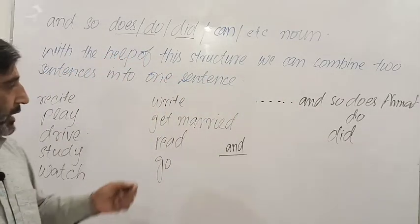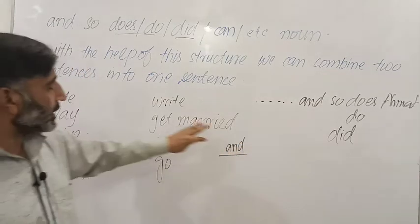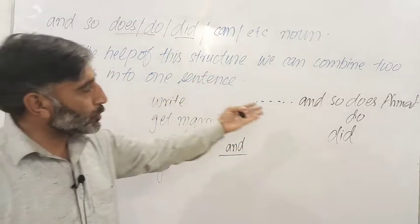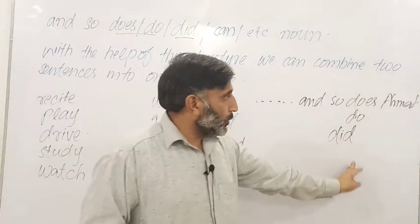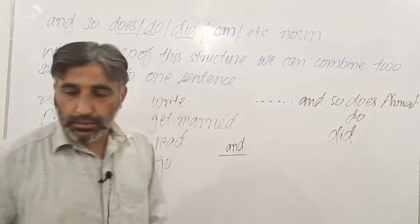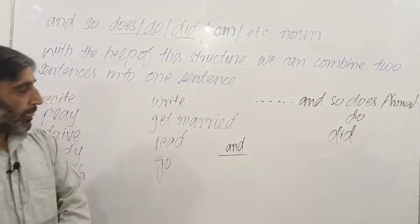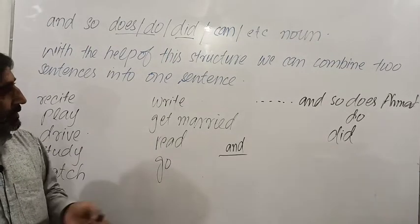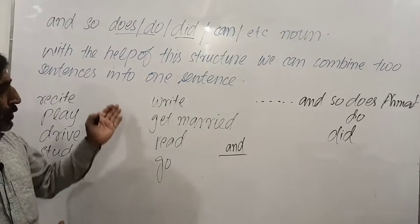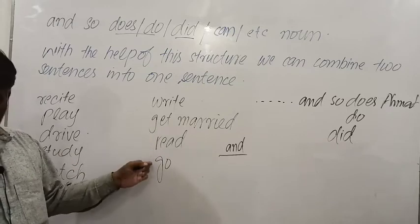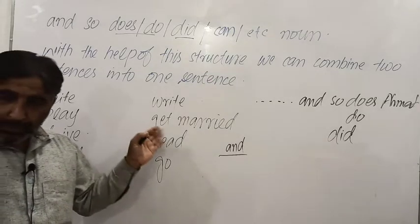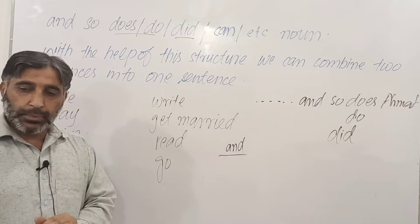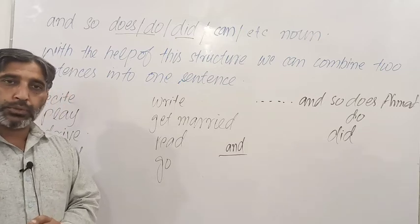تو اسی structure کے ذریعے سے ہم دو جملوں کو ایک جملے میں combine کر سکتے ہیں — اگر 'and' کے ذریعے combine نہ کریں۔ پہلا جملہ complete کہیں، پھر 'and so' پھر وہ auxiliary verb، اور auxiliary verb کے بعد object۔ I hope you will have learned this structure, dear viewers and listeners. I try to use a lot of sentences with the help of this structure in order to get complete command upon it. Thank you so much, Khuda Hafiz.